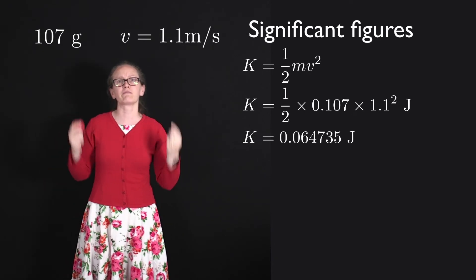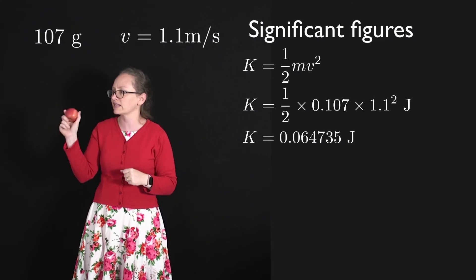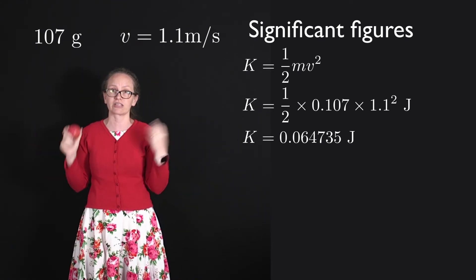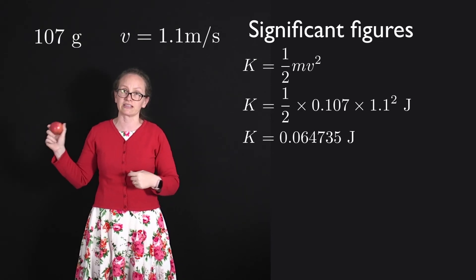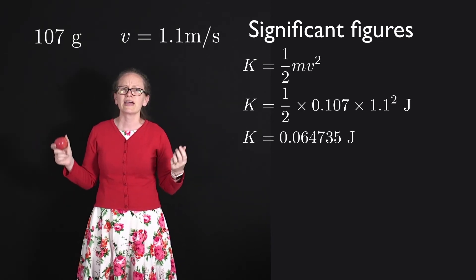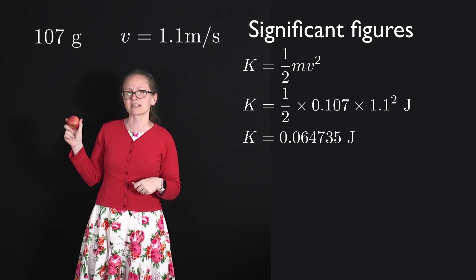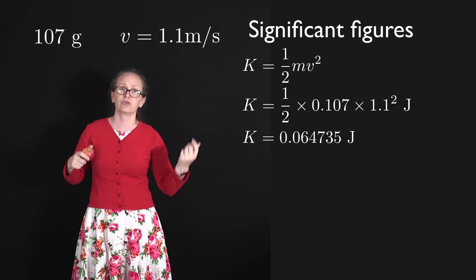Now if I wrote it down that way, I'd be suggesting that I knew the kinetic energy of my apple to five significant figures, because that's the number of non-zero digits that I have written down. However, that is a little ridiculous given that I only knew its mass with three significant figures and its velocity with two significant figures.